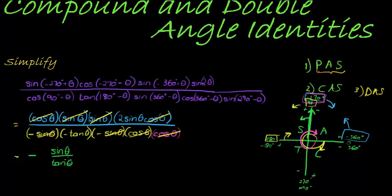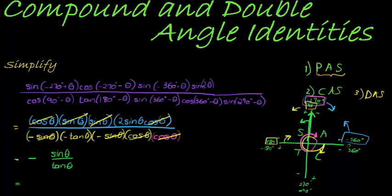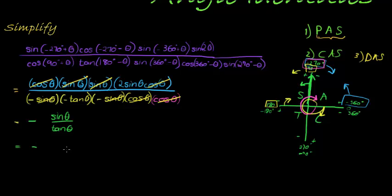Now, tan θ can be changed into sine over cos, so this can become sine θ over cos θ. When I divide with a fraction, I flip and multiply.